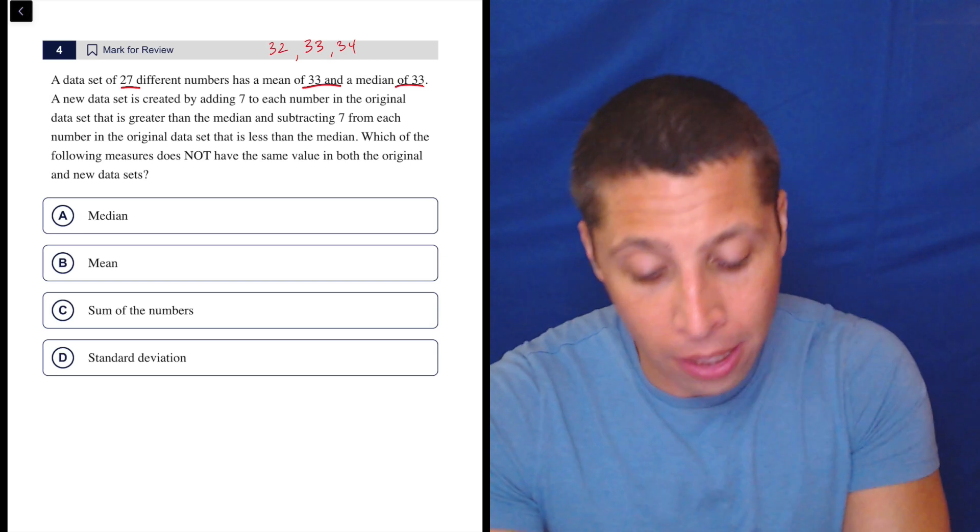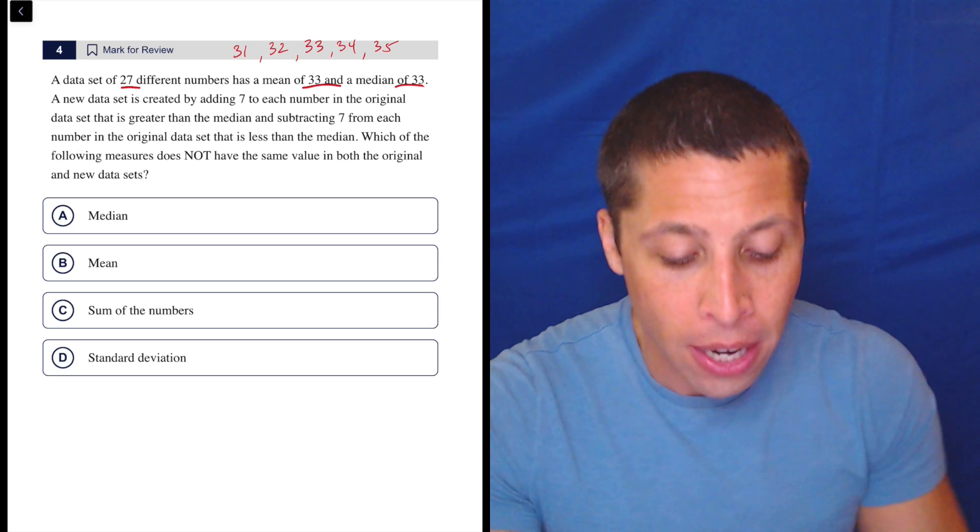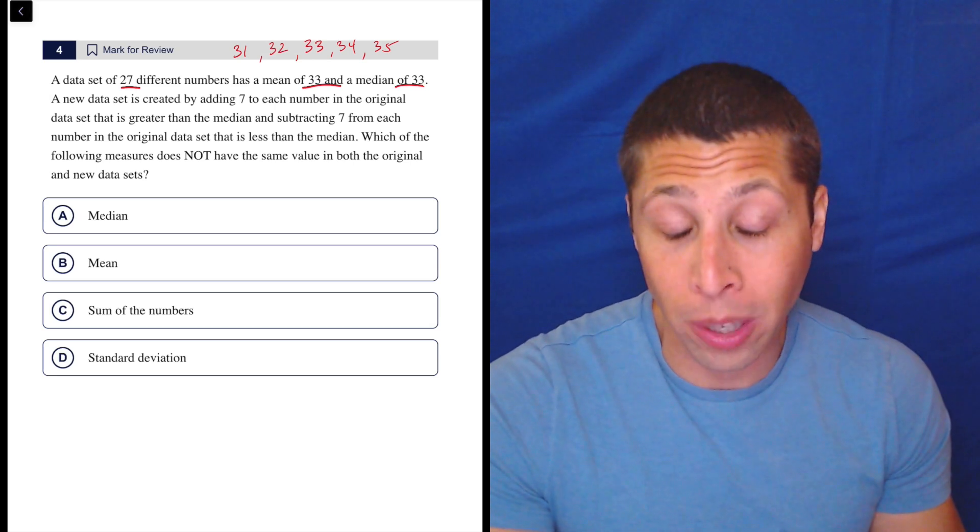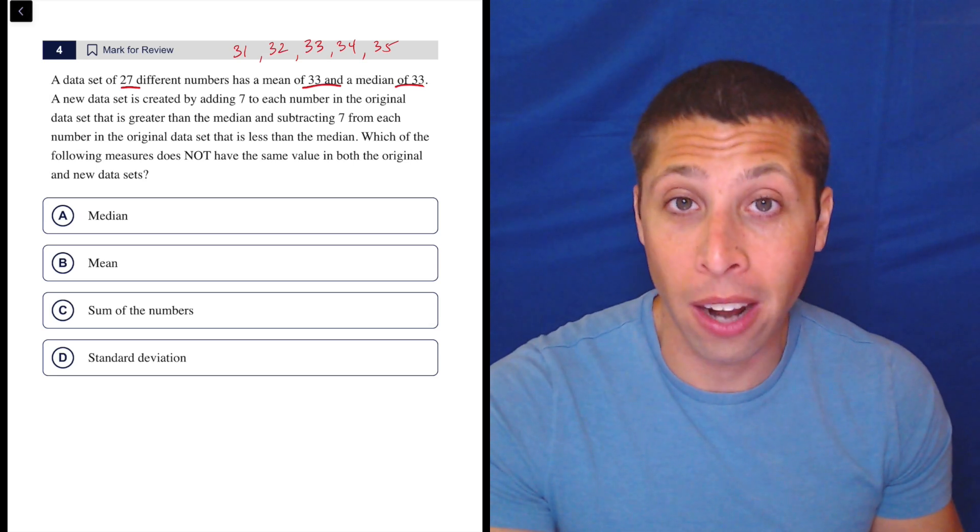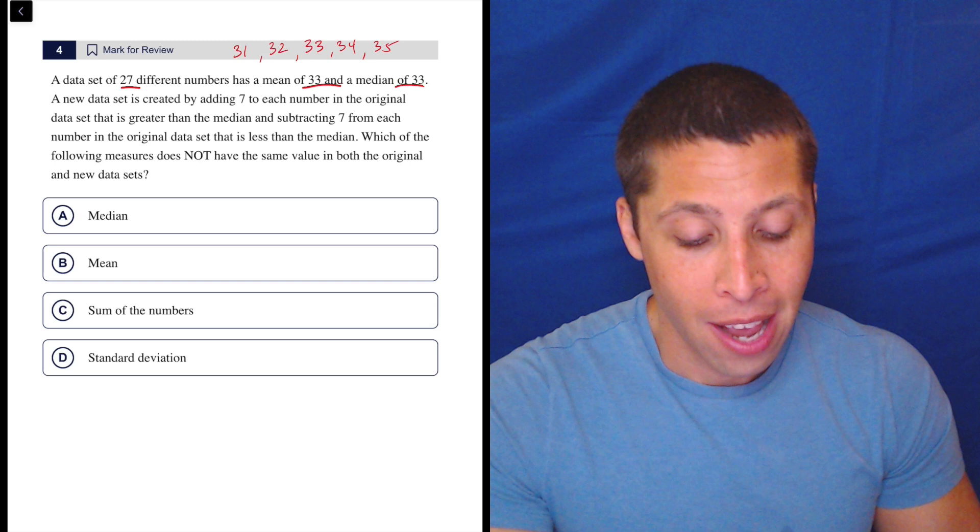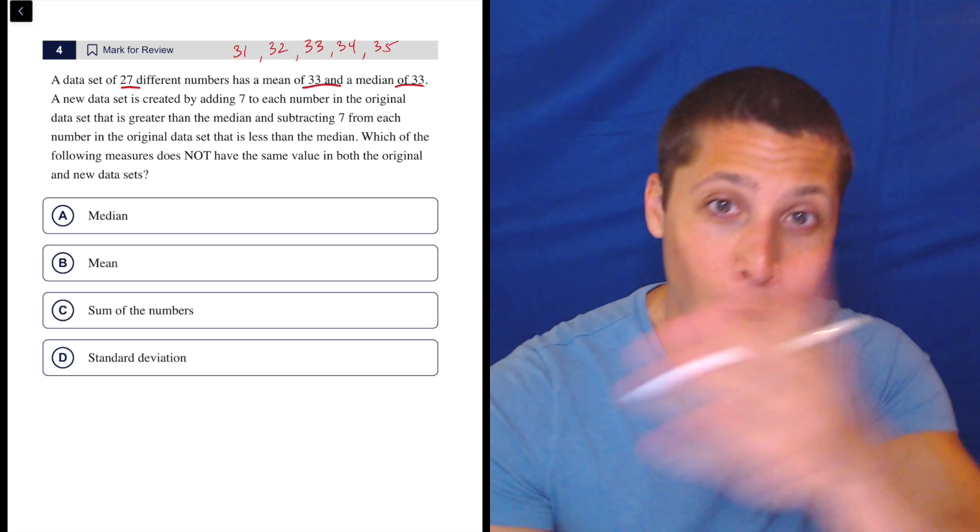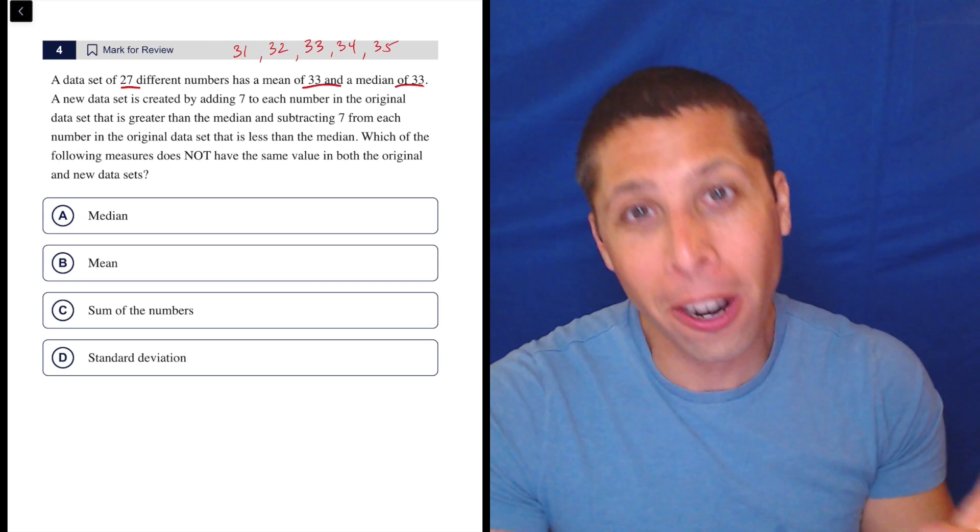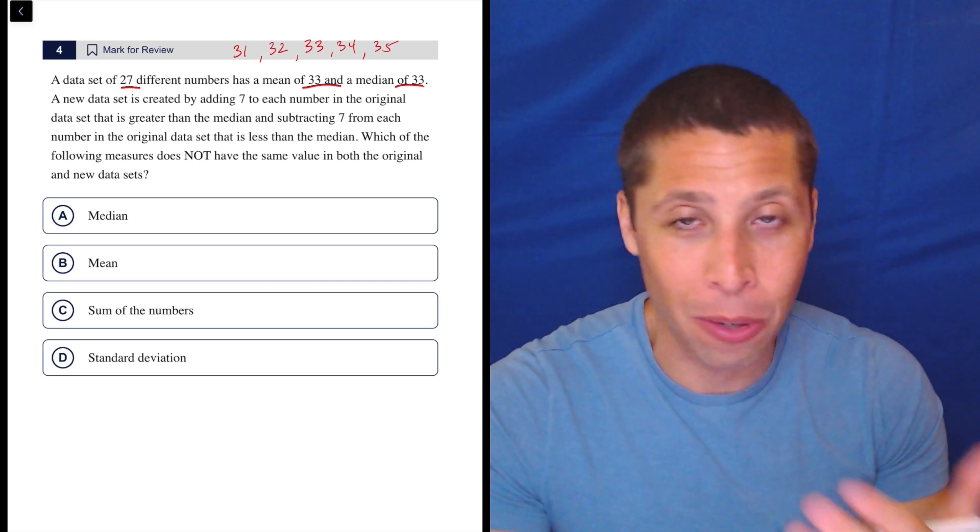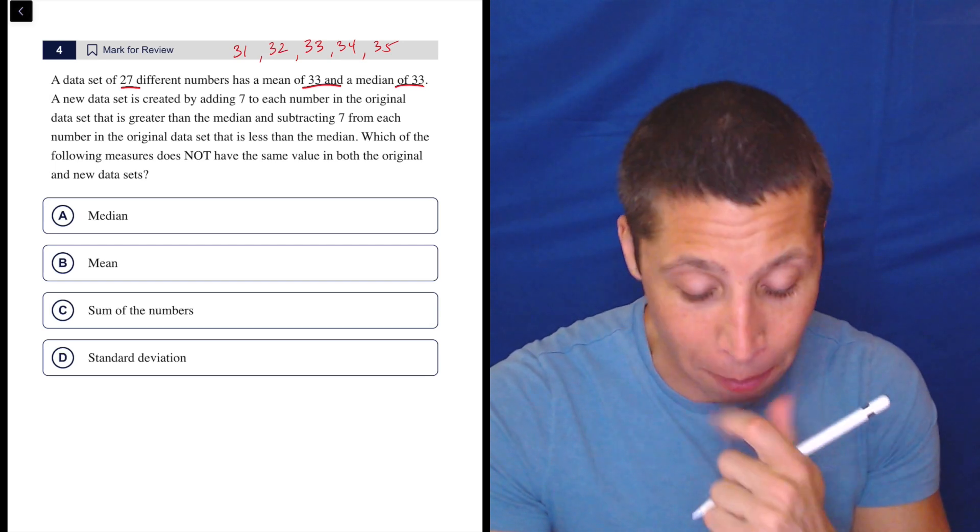So we could keep doing that—31 and 35—and we could do it until we have 27 numbers which would mean what? 13 on either side. That's a lot of numbers and they don't have to be sequential but for our sake that's what we want. We want them to be sequential. It's easier. It's just kind of easier to think about.